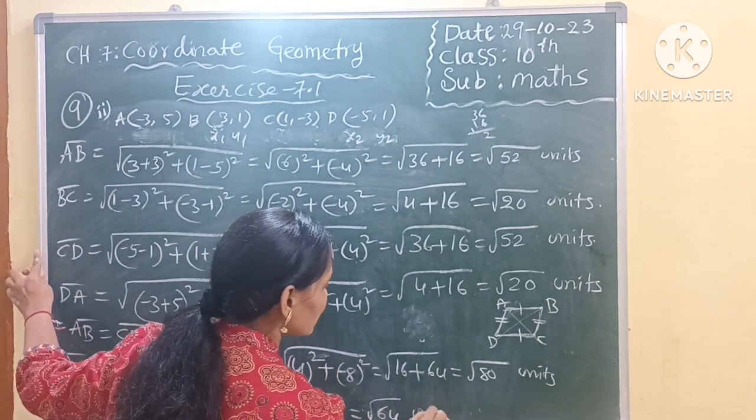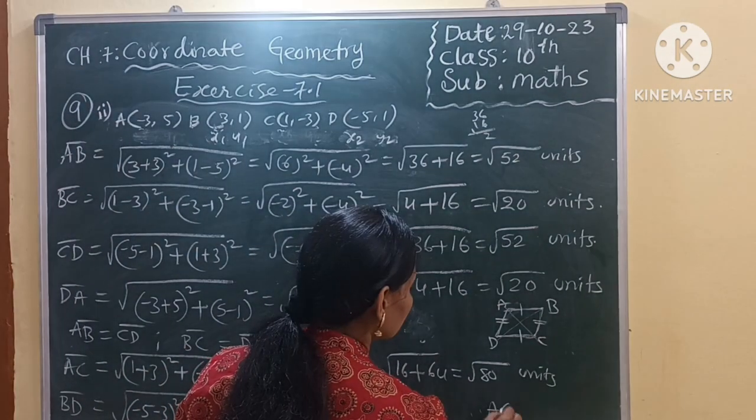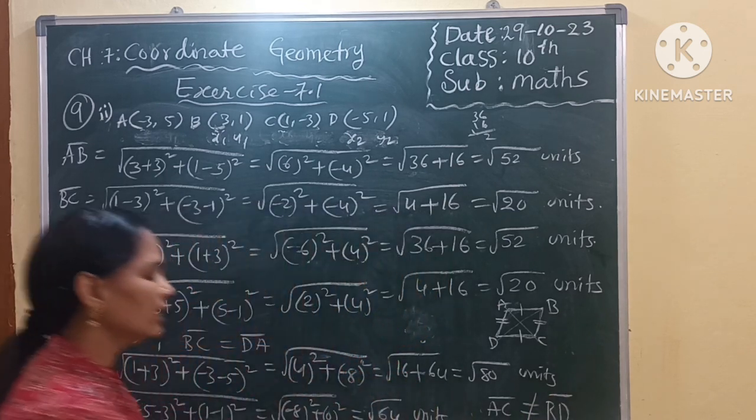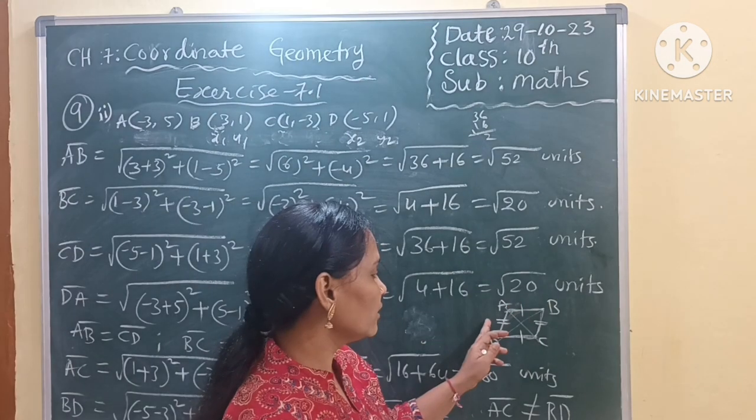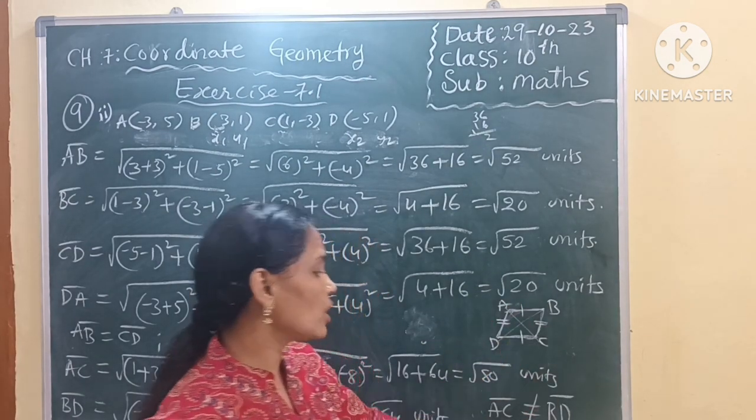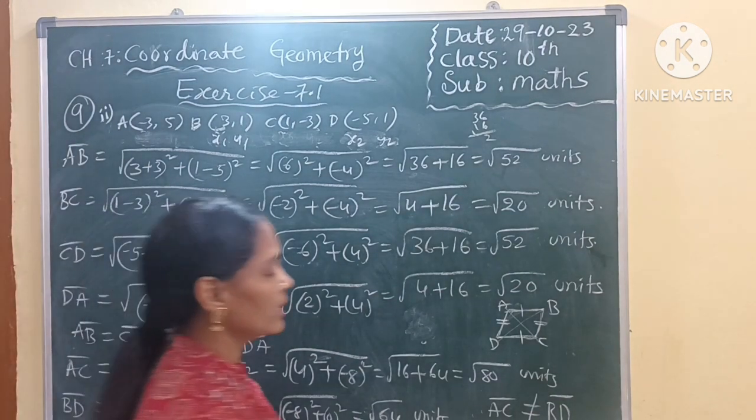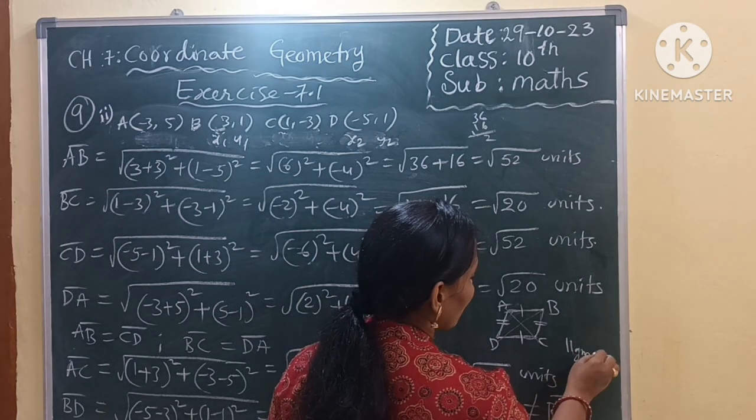But diagonals are not equal. Here diagonals are not equal, means that AC is not equal to BD. If in any quadrilateral, if opposite sides are equal in length and diagonals are not equal, that is a parallelogram.